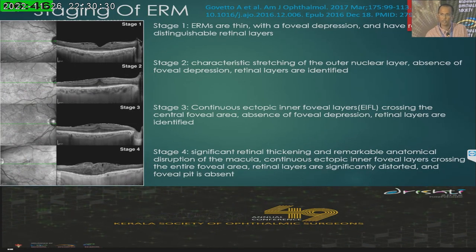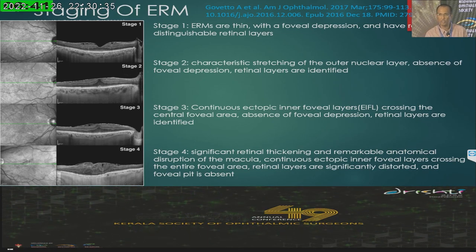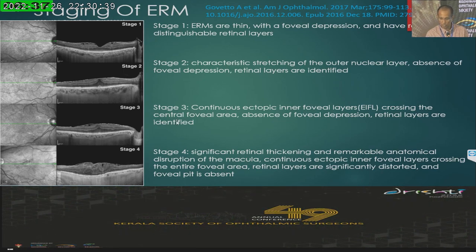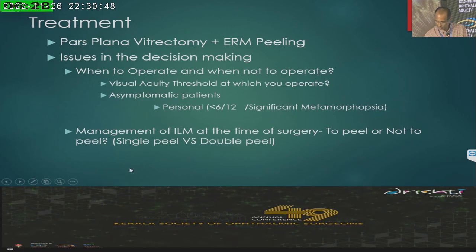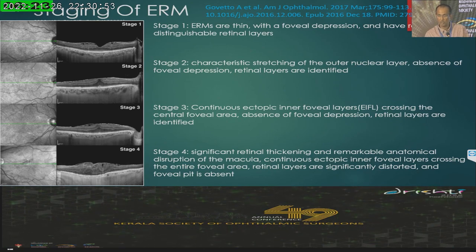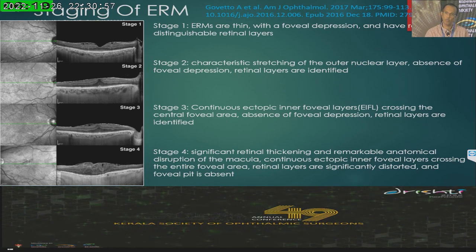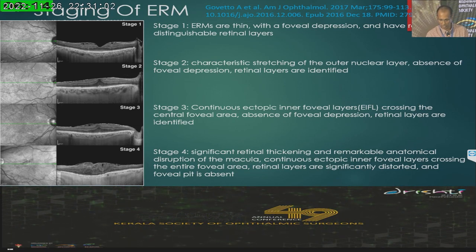When those EIFL layers are present, it results in a poorer prognosis. It is also important for the staging of ERM based on OCT. In the first two stages we don't have the EIFL, but in stage three and four we have it. In stage four, we have the EIFL along with complete distortion of the retinal layers — we are not able to distinguish the retinal layers at all.